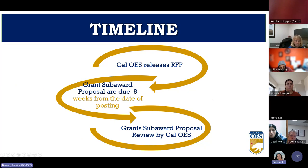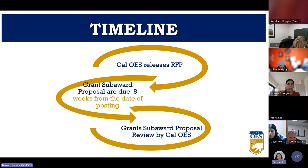Cal OES released the Listos California Statewide and Target Grant Program Request for Proposals on January 8th. Applicants have approximately eight weeks from that date to put the proposal packet together. Once complete, applicants will need to email a copy of the proposal packet to the Listos Grant Unit at listosgrants@caloes.ca.gov.